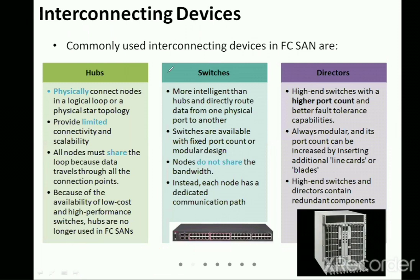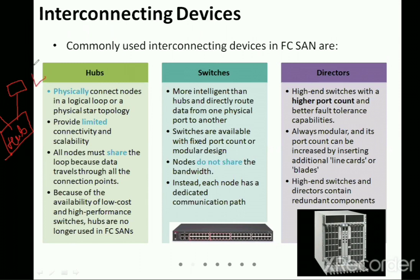The first interconnecting device we come across is the hub. When I say hub, you might picture the star topology used in networking, where the hub is at the center and transfers data from one node to another. In star topology, you have devices connecting to the hub, which acts as the main part to transfer data. Whenever devices want to communicate with one another, data is transferred via the hub.